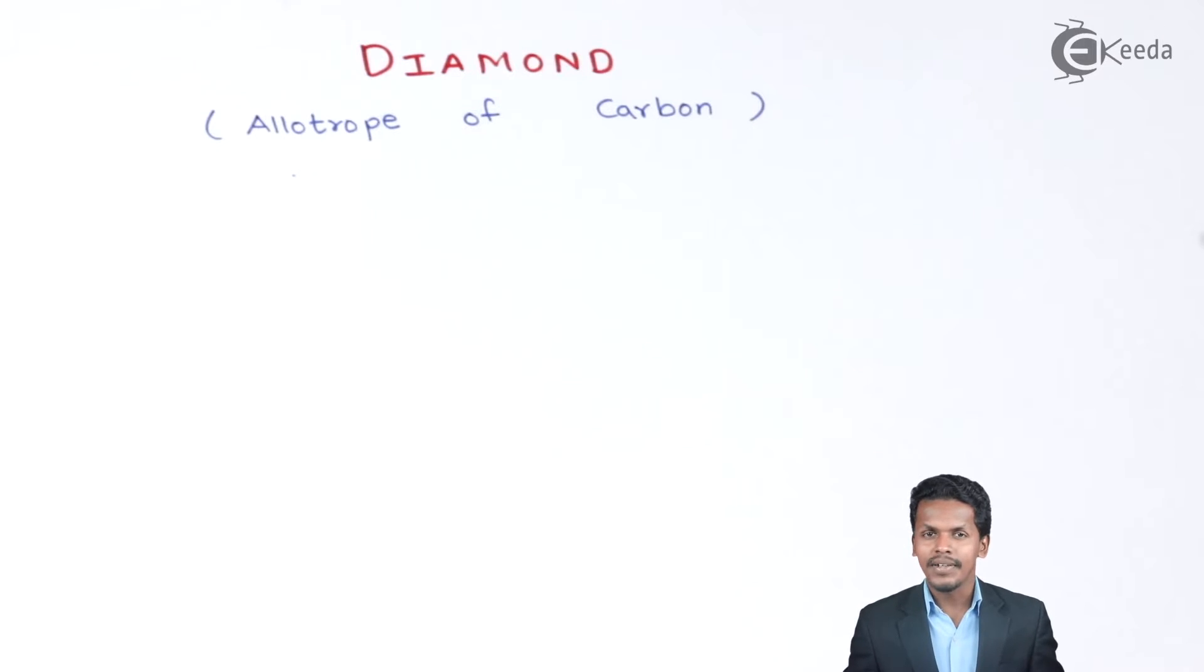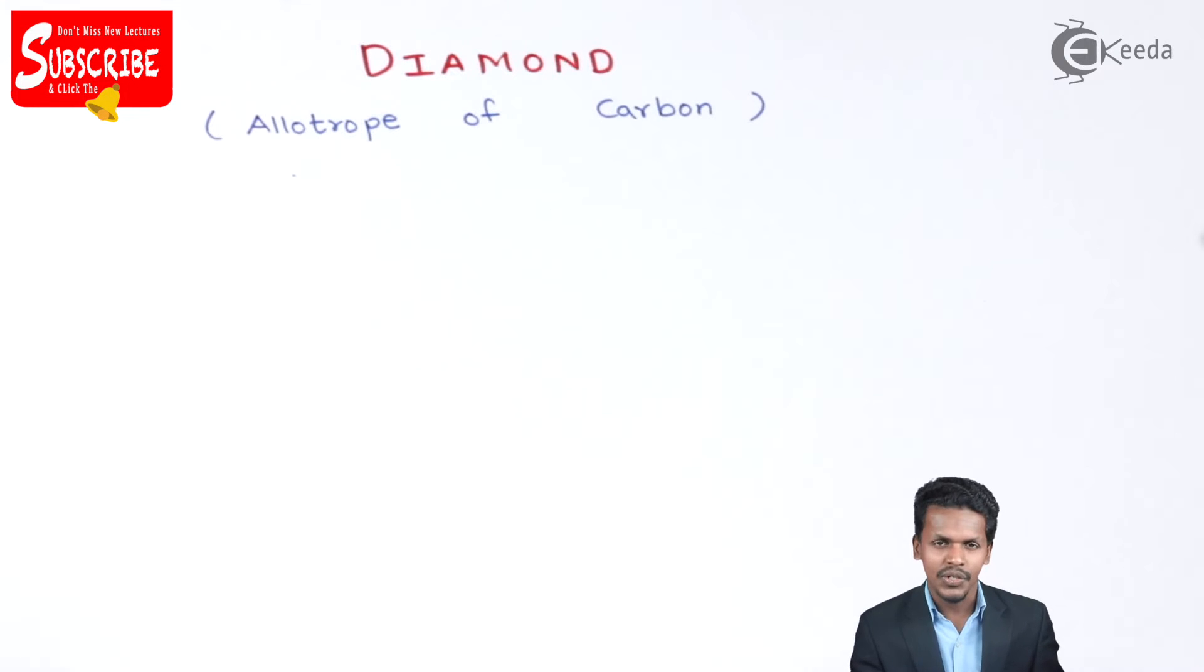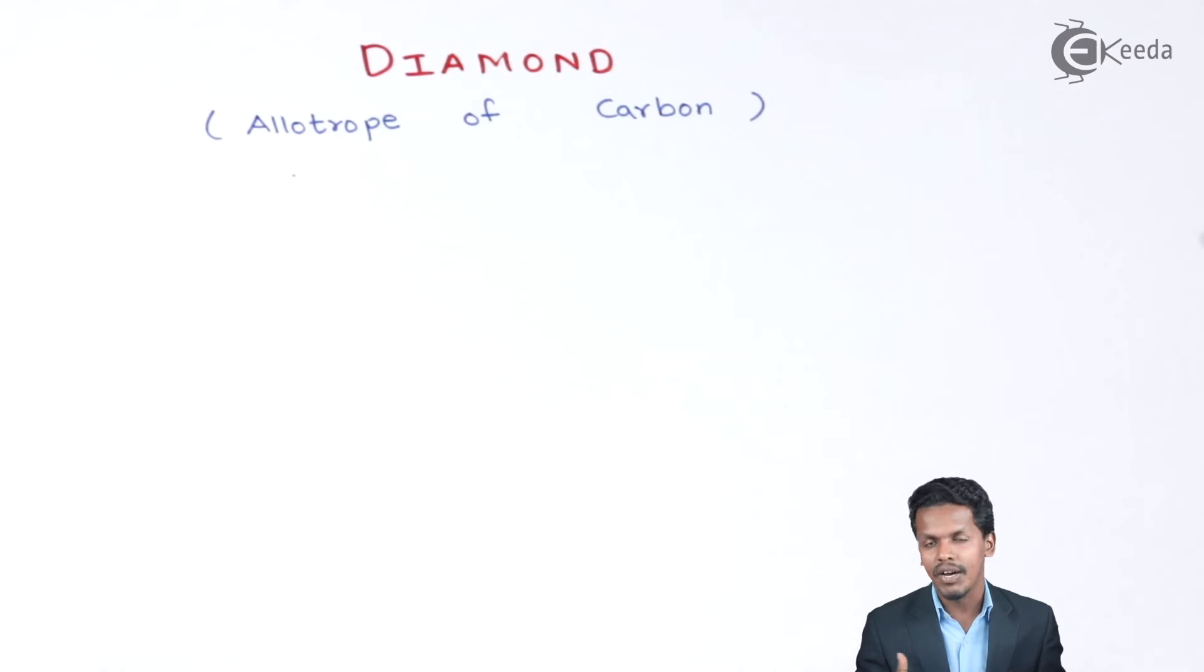Talking about diamond, it is made up of only carbon and that's the reason it is a very hard material. Diamond is a 3D structure of carbon in which each carbon forms a tetrahedral structure.